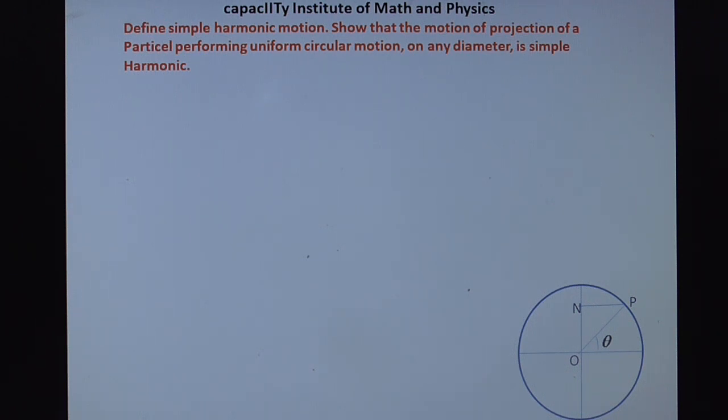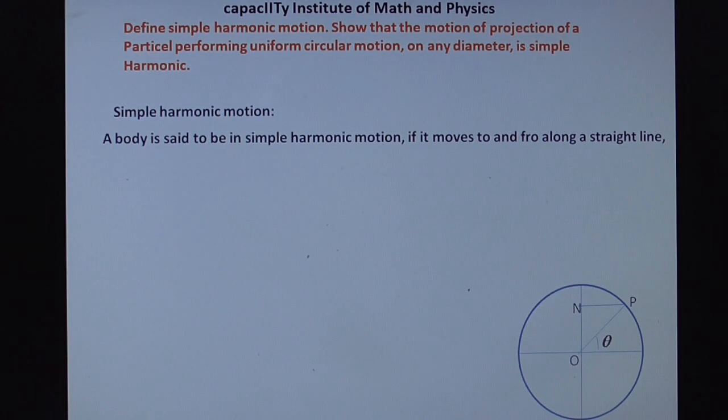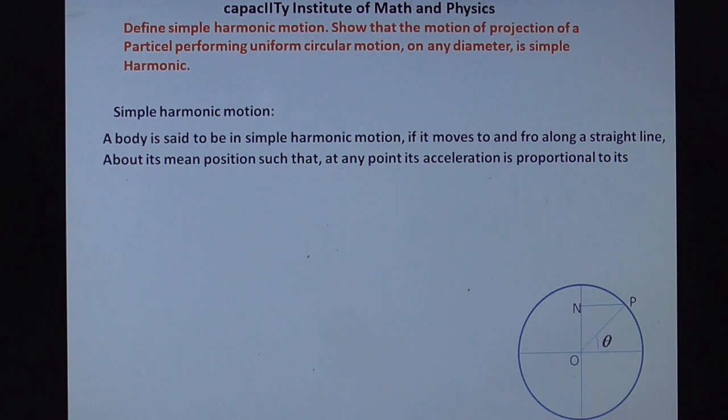You have to write the definition of simple harmonic motion. So what is simple harmonic motion? A body is said to be in simple harmonic motion if it moves to and fro along a straight line above its mean position.